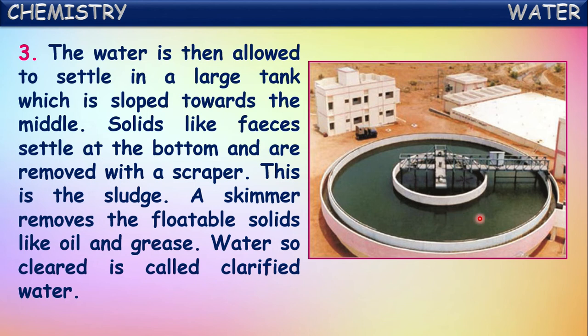A skimmer removes floatable solids like oil and grease which float on the water. By the removal of all these impurities, the clear water formed is called clarified water. In clarified water, almost all the bigger impurities - solid waste and floating waste - are removed.